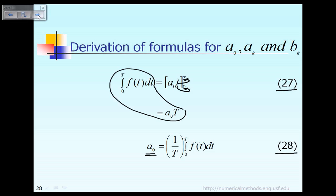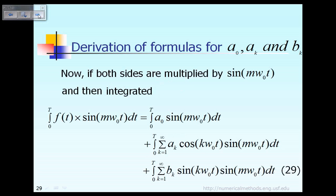That completes the formula I already proved to you. For the next formula I'm supposed to prove, we start like this. We start with a Fourier expression, which says any periodic function f(t) is equal to a constant a-nought, plus summation of a_k cos(kω₀t), plus summation of b_k times sin(kω₀t). That is a Fourier series expression, so we start with that Fourier series.